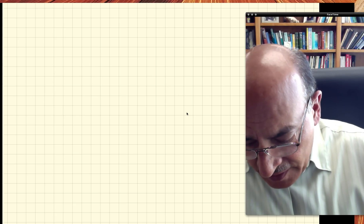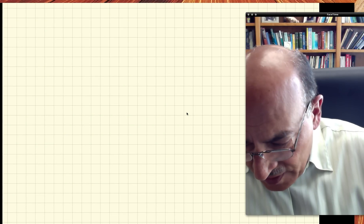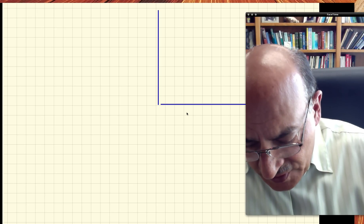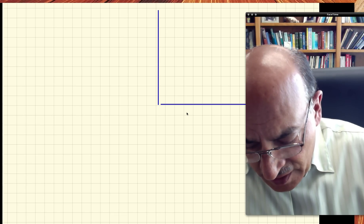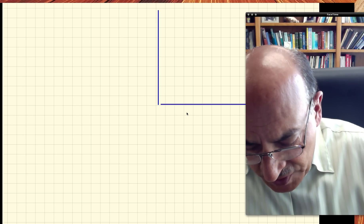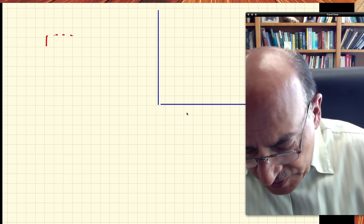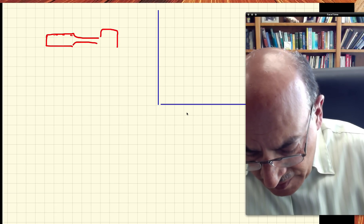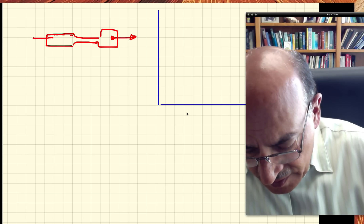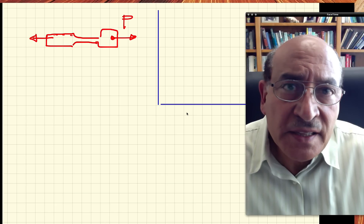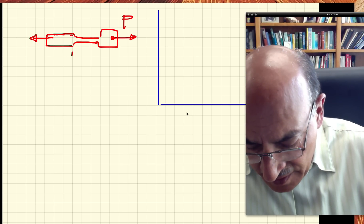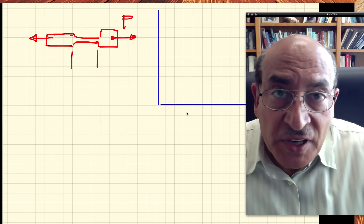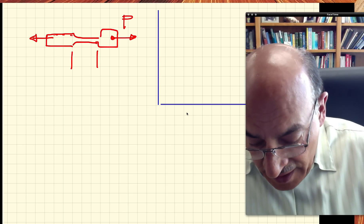To discuss how the tensile test is performed, we start with the stress-strain curve. We have two axes representing stress and strain. Tension is applied to a specimen with a dog bone geometry. The specimen has grips, and a force is applied on both sides. The gauge length — the distance between two points in the middle section — is designated as l₀.